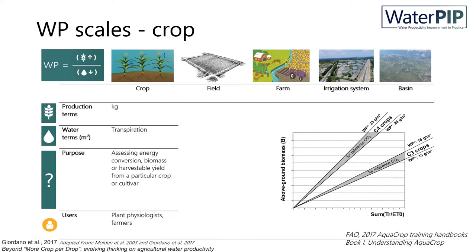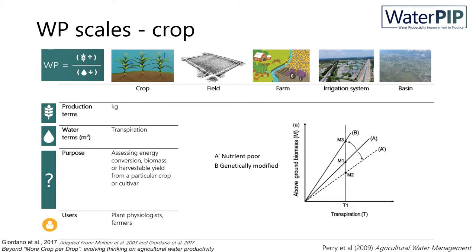The first scale is the scale of the crop. Following agronomic principles, the relationship between transpiration and biomass production is a linear one under similar climatic and nutrient conditions, for different plant types such as C-3 and C-4 crops, as can be seen in the right-hand figure. Differences in biomass production can therefore be attributed to stress factors, showing the crop is not performing optimally. Differences in crop water productivity can also indicate stress factors that have affected the harvest index, considered the harvestable yield of a crop.